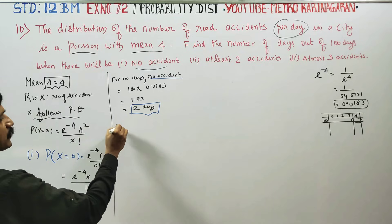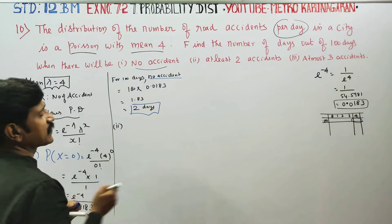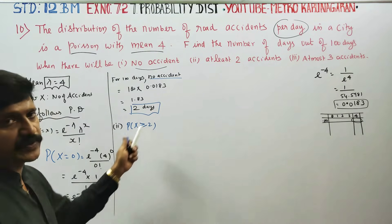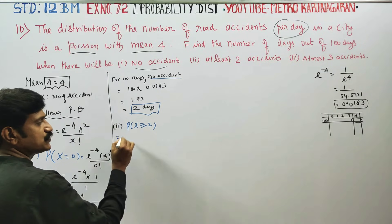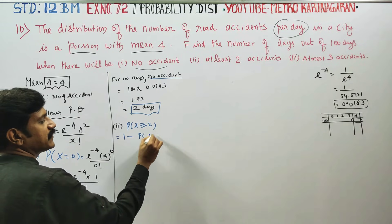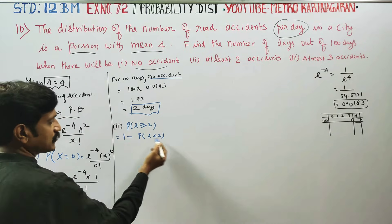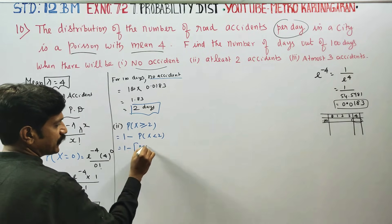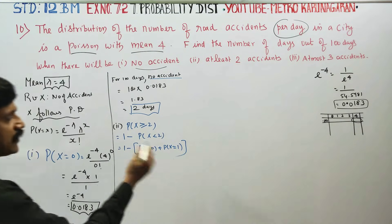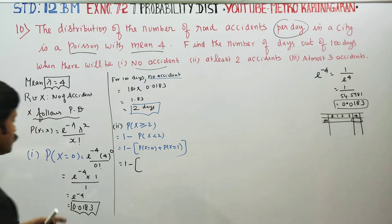Sum number 2: at least 2 accidents. At least means x is greater than or equal to 2. So we need P(X ≥ 2). Using the complement rule, this equals 1 minus P(X less than or equal to 1), which is 1 minus [P(X=0) plus P(X=1)].